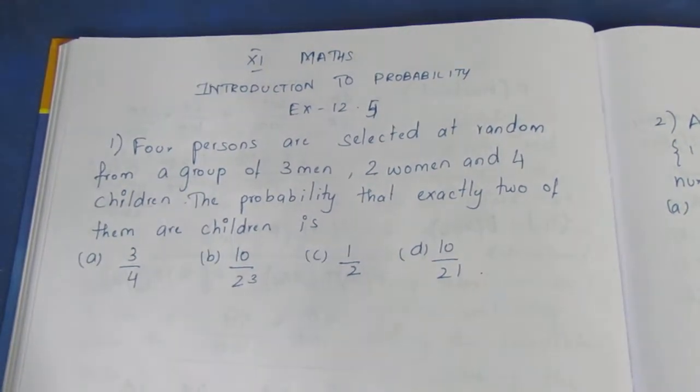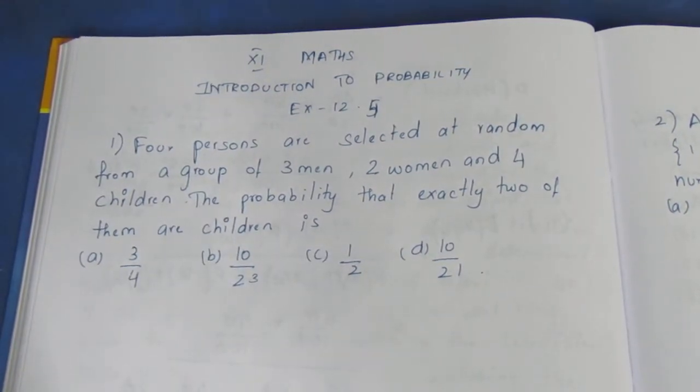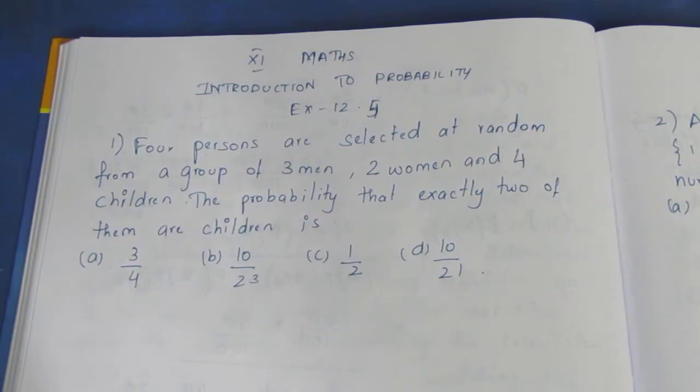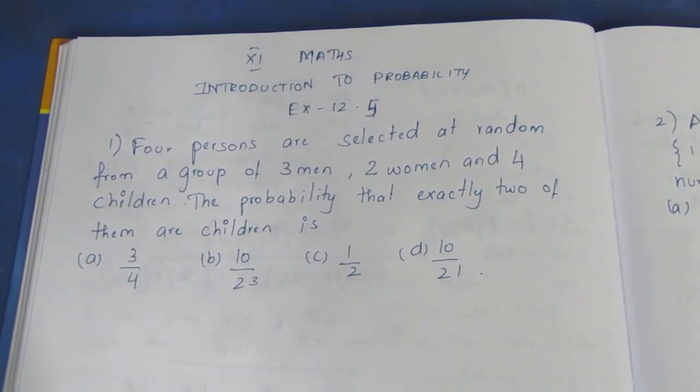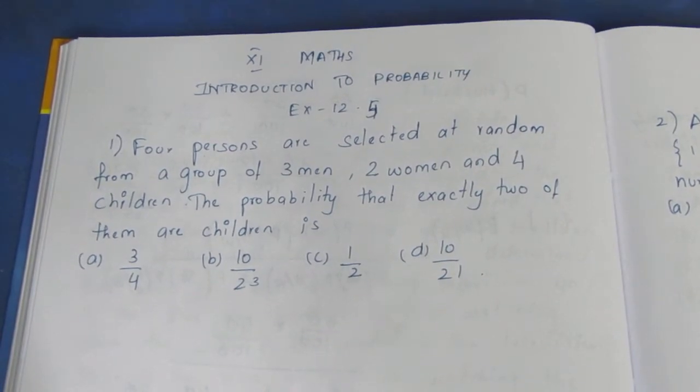Hello viewers, I am Mike Lee. In Class 11th Maths Introduction to Probability Exercise 12.5, we are solving the first sum in the video. Let's look at the question. Four persons are selected at random from a group of three men, two women and four children.